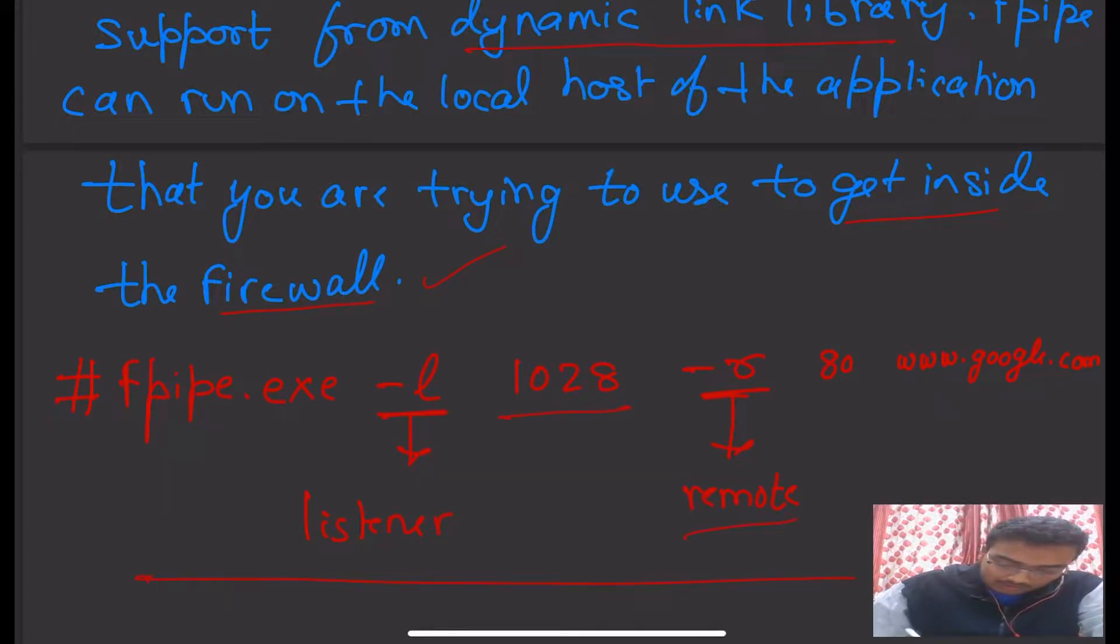Then minus R - R stands for remote - followed by 80, which is the port number for the website. This is the syntax for making use of the F-Pipe tool.